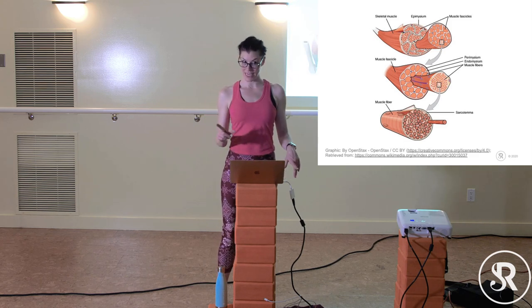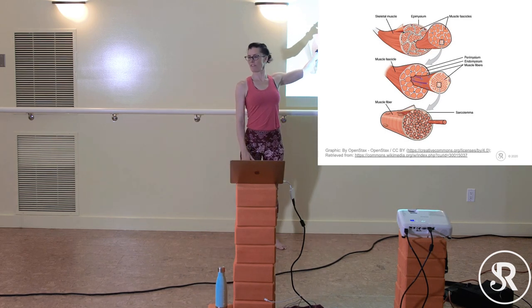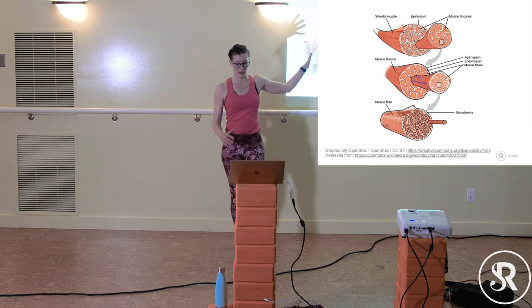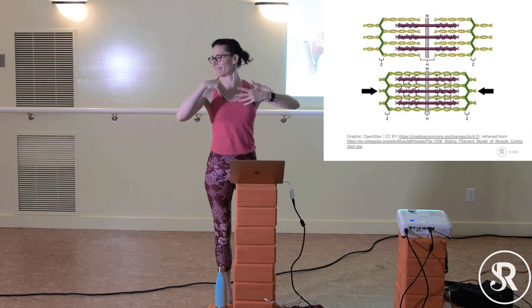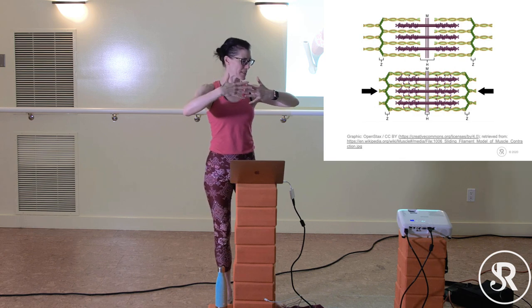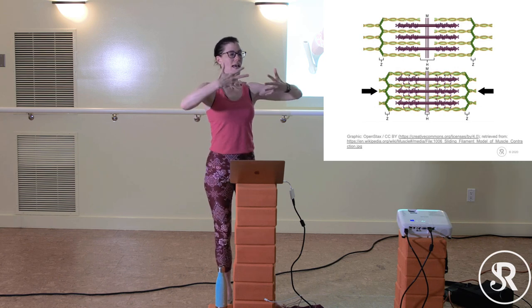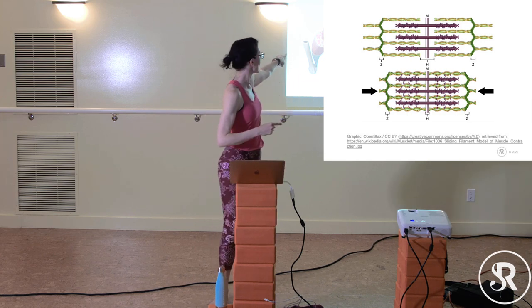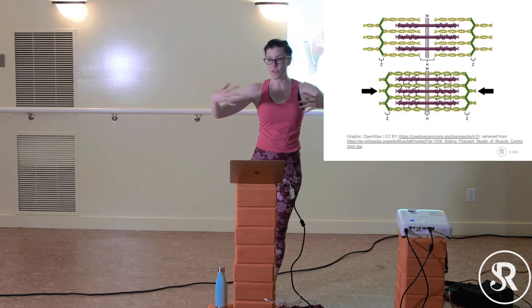Individual muscle fibers are surrounded by fascia; those are bundled together and surrounded by fascia again, and so on — all stuck under a bone. Then the nervous system causes a chemical reaction involving potassium and calcium that causes the muscles to contract. Because muscles are striated — bundled in the same shape — when a whole bunch of them contract together, that causes force.